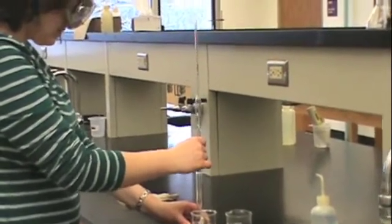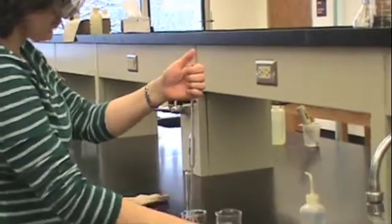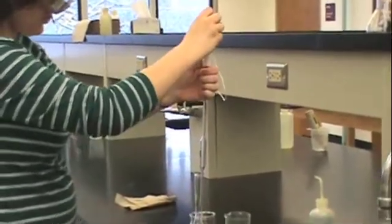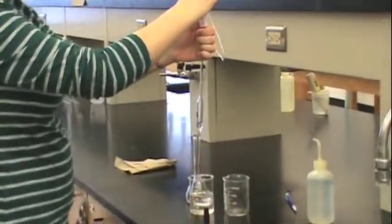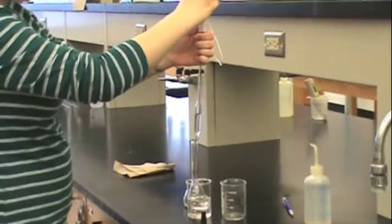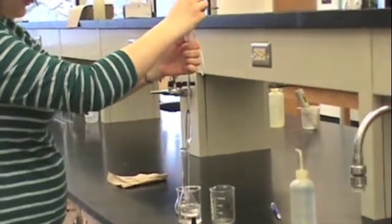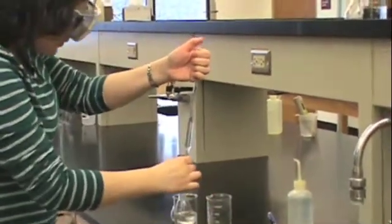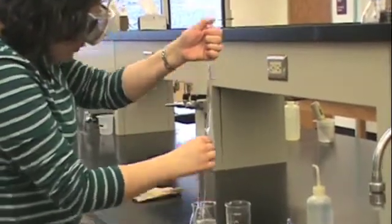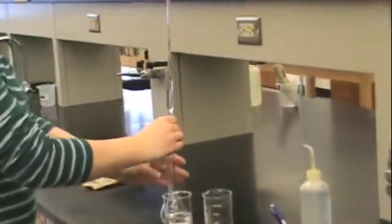Then you will take another 10 milliliters of your concentrated buffer for a total of 20 milliliters of concentrated buffer to make the dilute buffer. Again, fill to the line and empty directly into your volumetric flask.